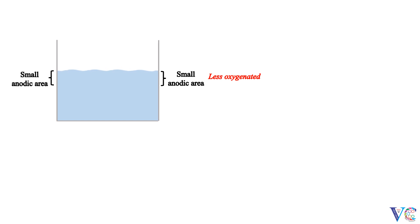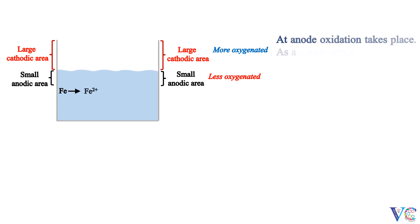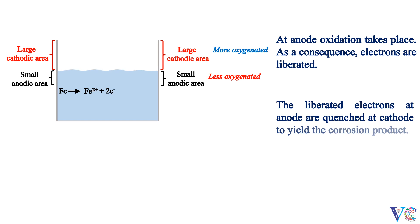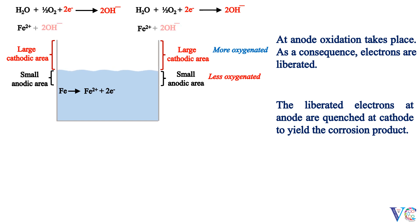In a water tank filled with water, the part just below the surface of the water is less oxygenated, hence a small anodic area is developed. While the upper part of the water tank, above the surface of the water, is more oxygenated, so a large cathodic area is formed. At the anode, oxidation takes place — as a consequence, electrons are liberated. The liberated electrons at the anode are quenched at the cathode to yield the corrosion product, which is deposited.